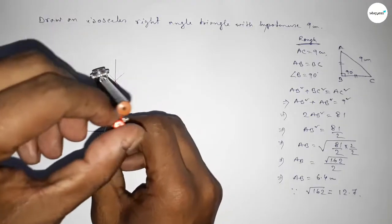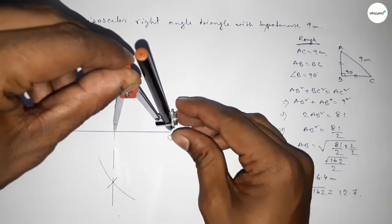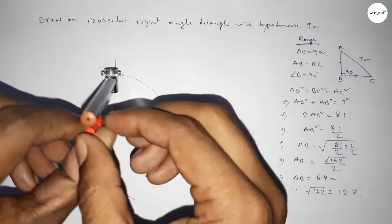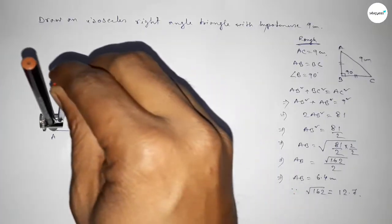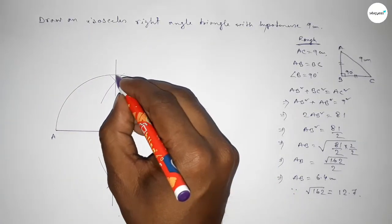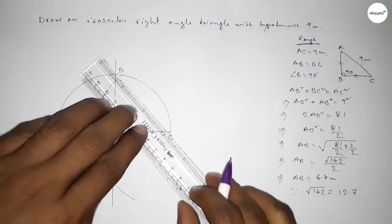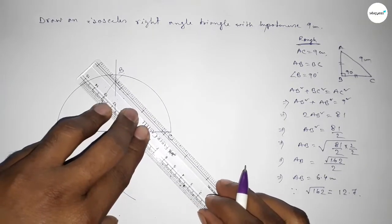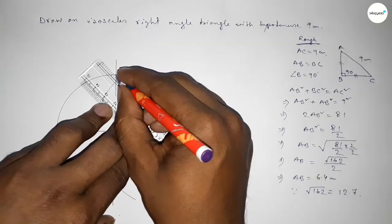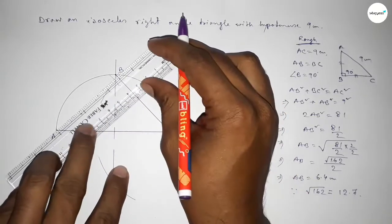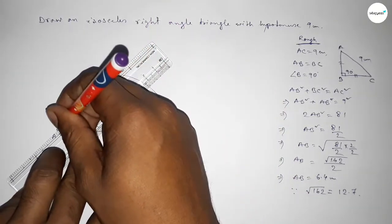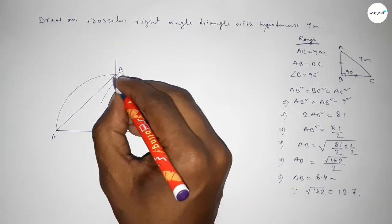Putting the compass at the midpoint O and taking the length OA equal to OC as the radius, drawing a semicircle. The semicircle and the bisector meet at a point B.